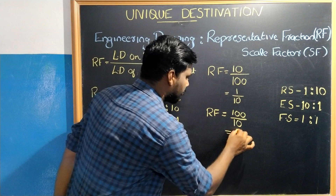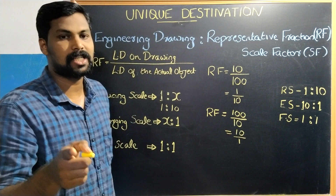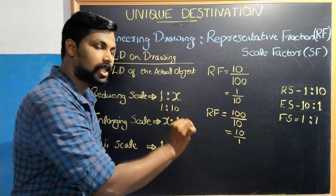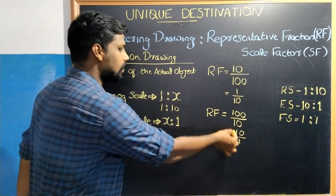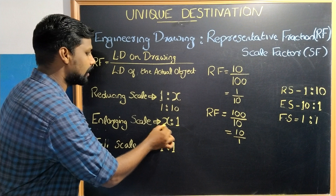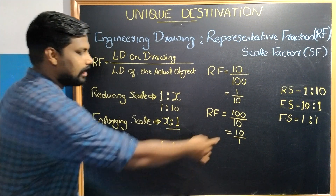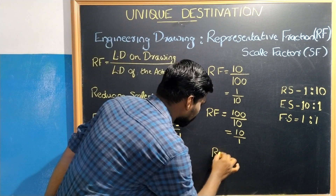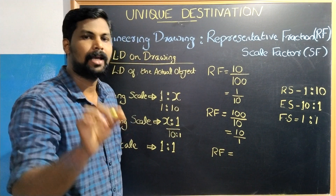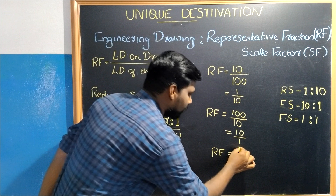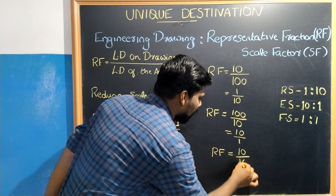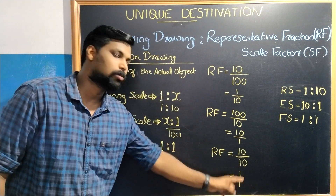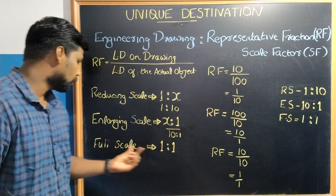The representative fraction scale of 10 by 1 means 10 is to 1, so we have to enlarge this scale. Enlarging scale designation is X is to 1 — in this case, 10 is to 1. If the drawing distance equals the actual distance, that is 1 by 1 representative fraction — scale 1 is to 1, also called full scale.